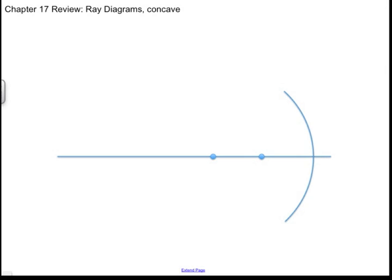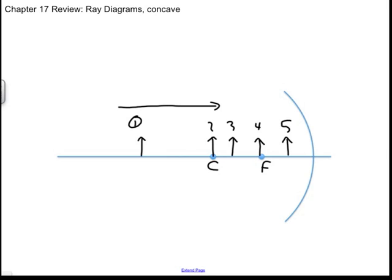We are looking at curved mirrors for the chapter 17 review. I'm going to draw the five cases of concave ray diagrams and then the sixth case, which is a convex ray diagram. I number these starting from the left: case 1 is an object far out, case 2 on C, case 3 between C and F, case 4 on F, case 5 inside F — a progression working closer and closer to the mirror.